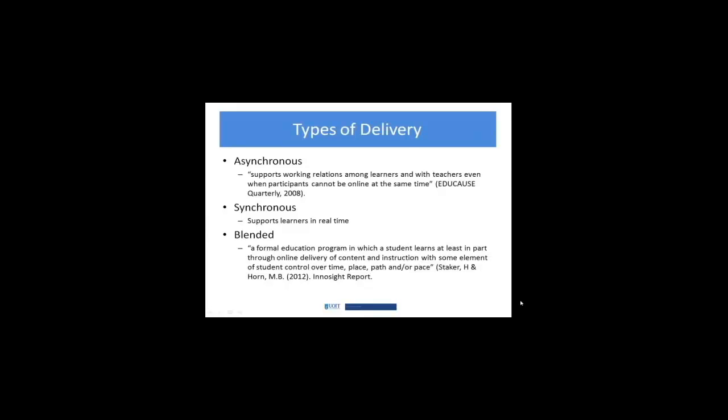A blended type of delivery is where at least in part some of the content is delivered online. The key part of this definition — Staker and Horn's definition from the iNACOL report — is that the student has some control over the time, the place, the path, and/or the pace of the learning. Those are the three broad types of delivery.